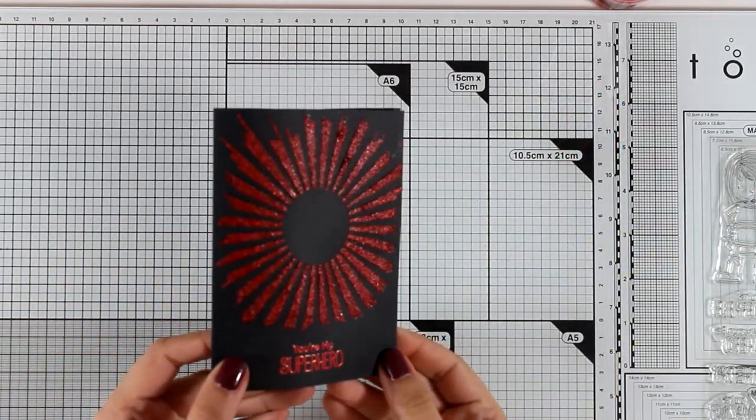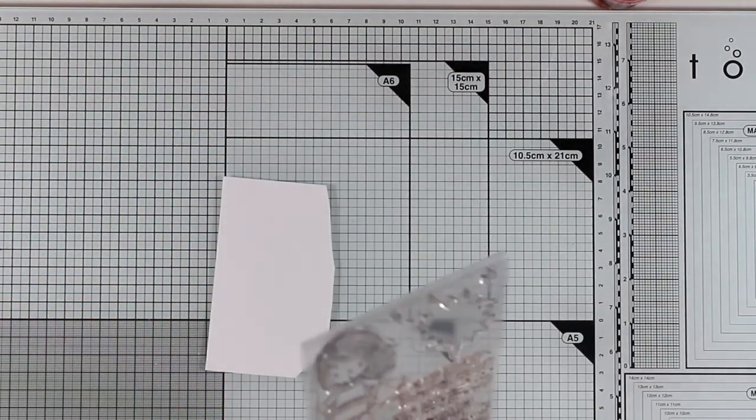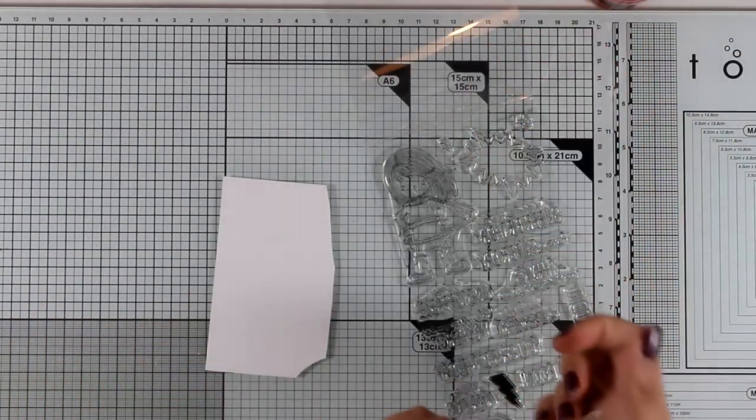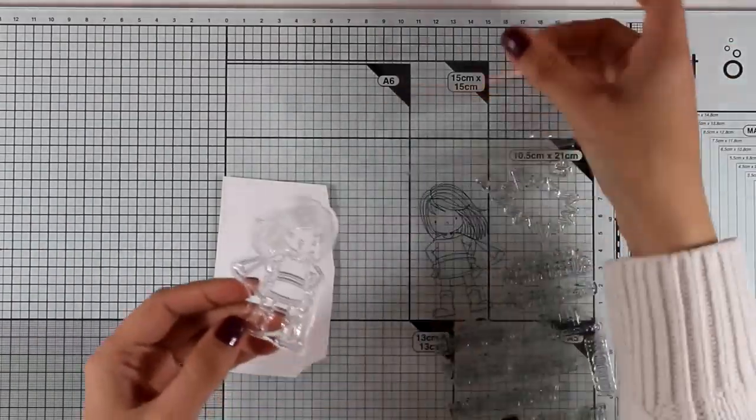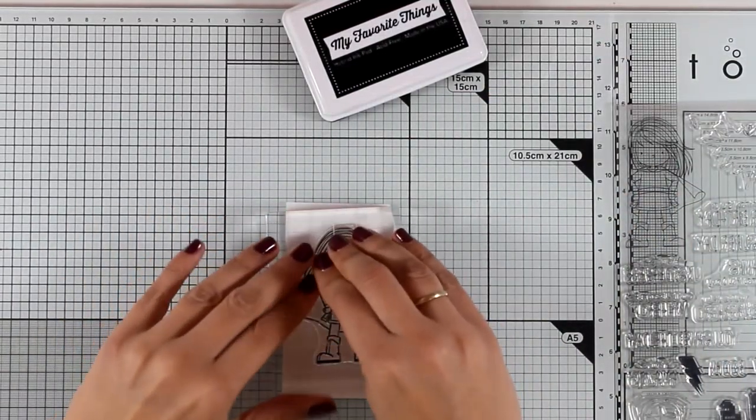I always love the result of glimmer paste. It's really striking and it comes in so many different colors. Surprisingly it's going to dry quite quickly in less than 10 minutes and I will go ahead and do the stamping. Once my little girl is ready to go the glimmer paste is going to be dry.